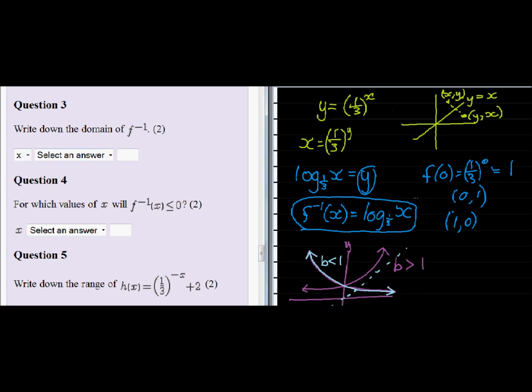Now the next question is, what am I allowed to put in for x? Well, we know that for a logarithmic expression, the interior, that inside, must be larger than 0.